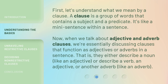First, let's understand what we mean by a clause. A clause is a group of words that contains a subject and a predicate — it's like a mini-sentence within a sentence. When we talk about adjective and adverb clauses, we're essentially discussing clauses that function as adjectives or adverbs in a sentence. That is, they either describe a noun, like an adjective, or describe a verb, an adjective, or another adverb, like an adverb.